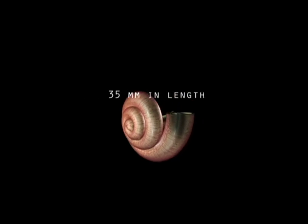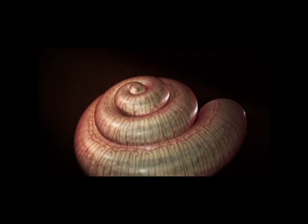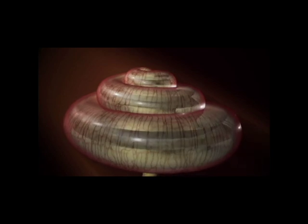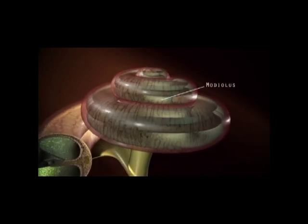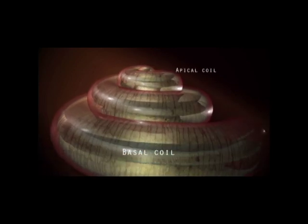About 35mm in length when straightened, the human cochlea spirals 2.5 times around its central bony modiolus, starting with a wide basal coil and tapering to a tighter apical coil.